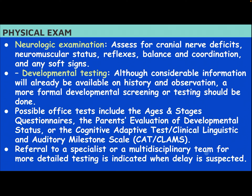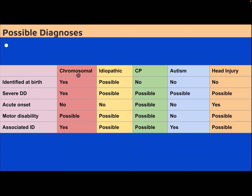Referral to a specialist or multidisciplinary team for more detailed testing is indicated when a delay is suspected. Possible diagnoses: chromosomal — identified at birth with severe developmental delay, possible motor disability and associated intellectual disability. Idiopathic — possible identification at birth, possible severe intellectual disability with possible motor disability. Cerebral palsy — possible severe developmental delay with acute onset, motor disability, and possible associated intellectual disability. Autism — possible severe developmental delay with associated intellectual disability. Head injury — acute onset, possible severe motor disability and possible associated intellectual disability.